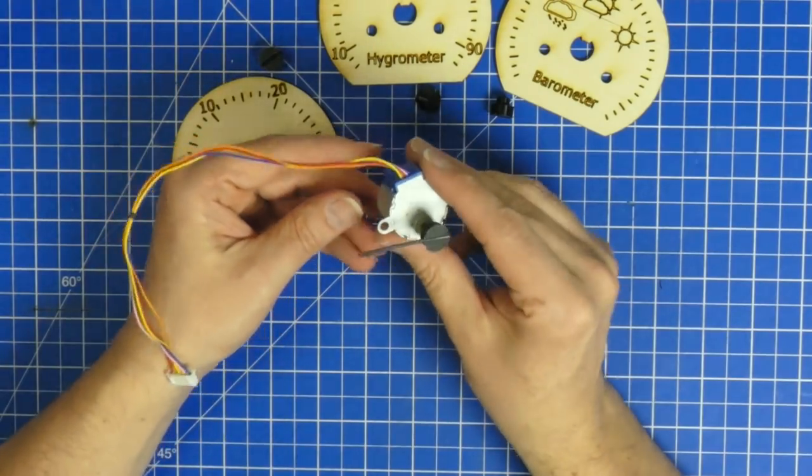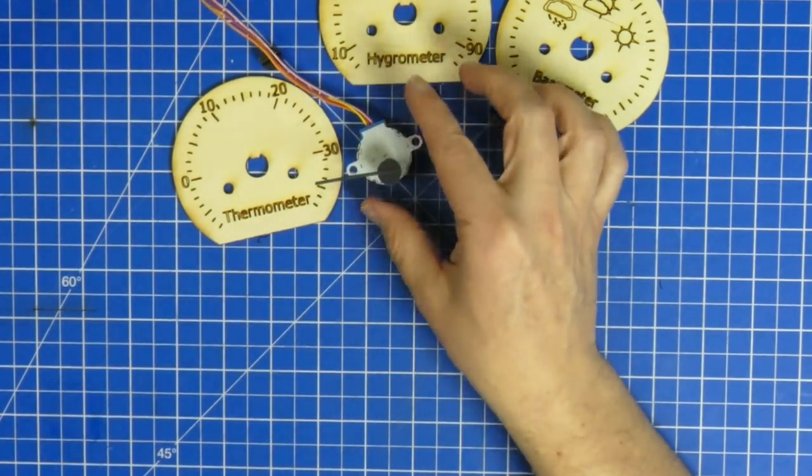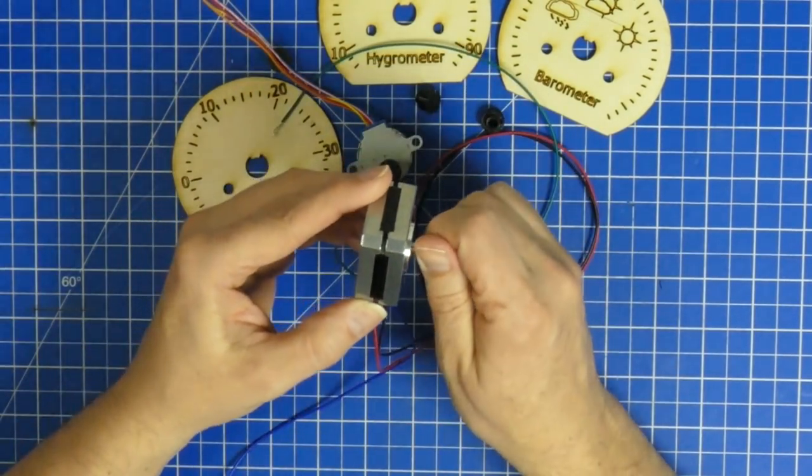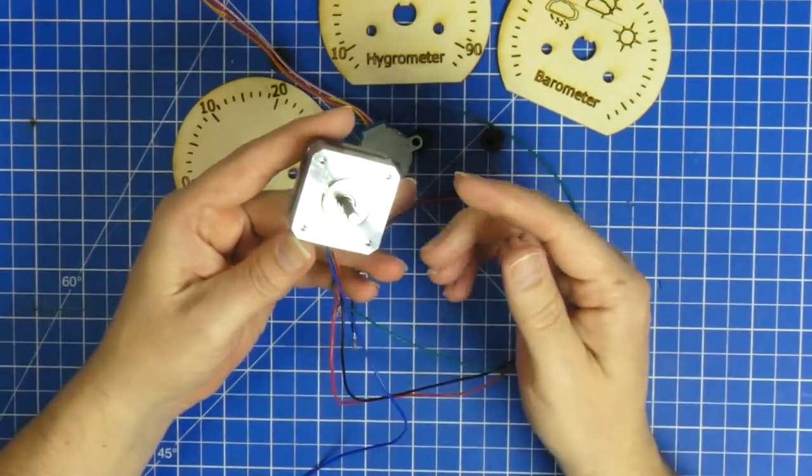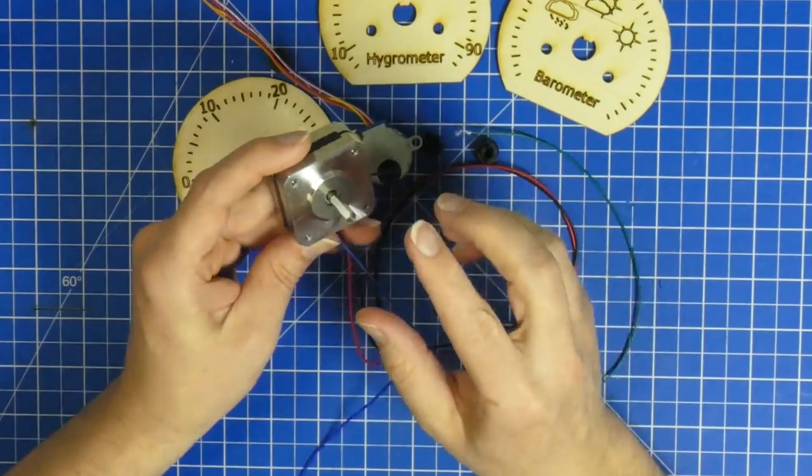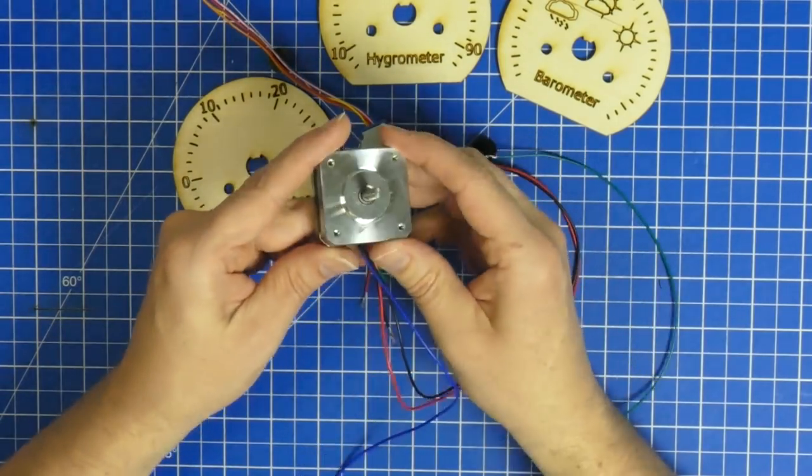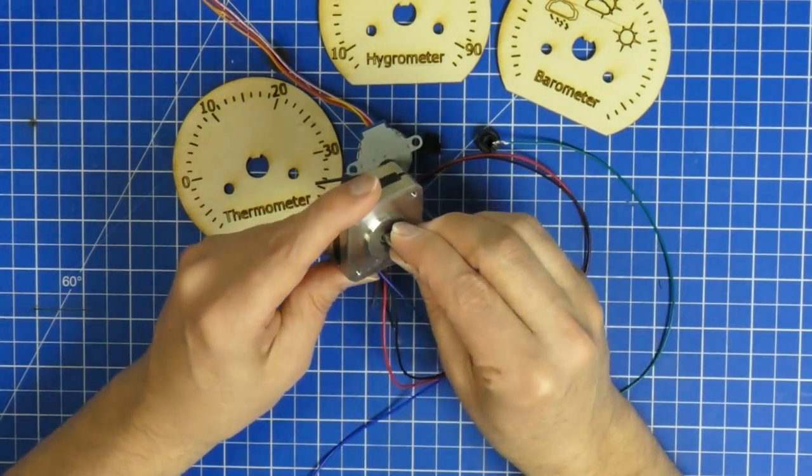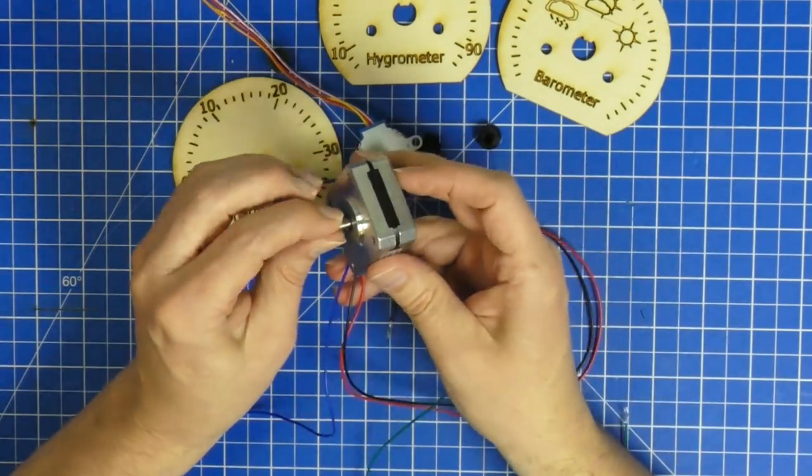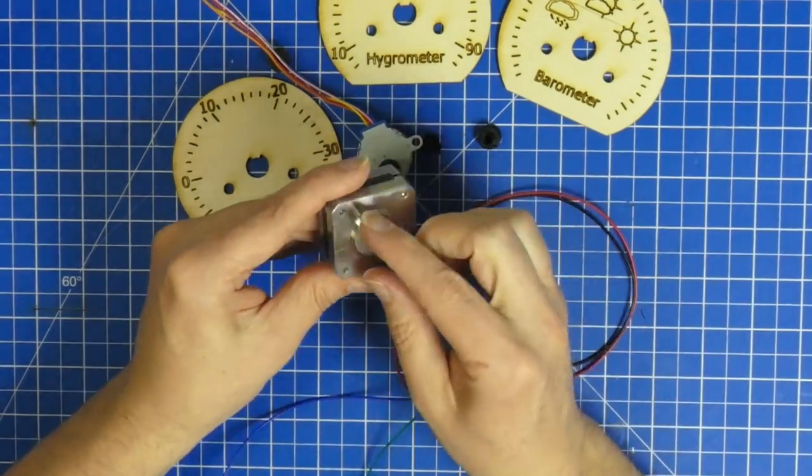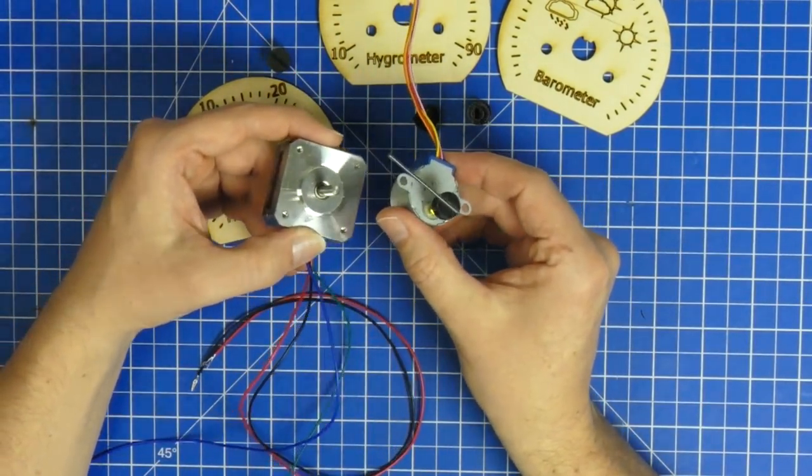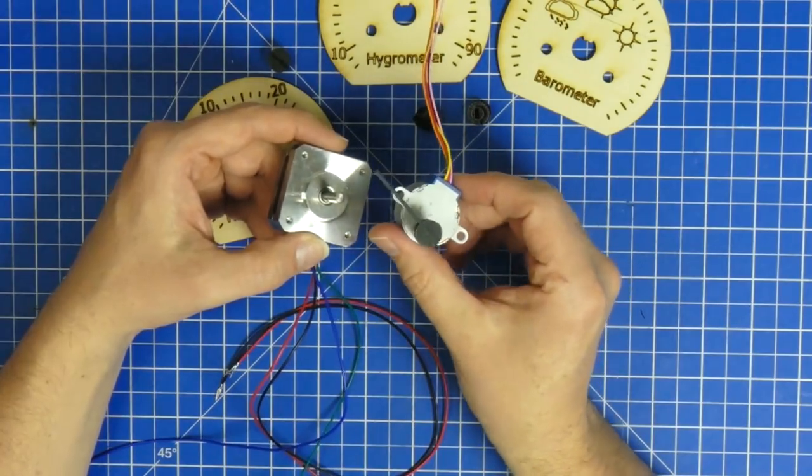If you want to have a dial that moves really fast you use a small stepper like this one. Because of the much higher inertia and the higher force that you can exert with this, this can move really fast. Also this one doesn't have a gearing so these are good for moving dials really fast and if you want to have it slow and steady use a small stepper like this one.